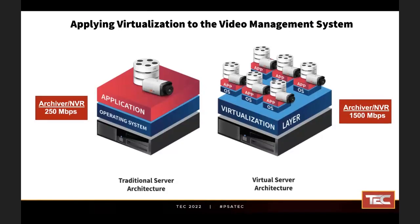Anytime you virtualize, you get much more effective utilization of the resources associated with that box. In a traditional server architecture, software limitations almost always kick in before hardware does. Regardless of what VMS platform you're working with, if that software says it can only do 250, 350, or 500 megabits per second and you load that onto a bare metal server, that's your max. On average, I'll see 60 to 40% of the actual CPU being used and roughly 40% of the memory, but in a bare metal environment, you cannot access the remainder of those CPU cycles you're not using.